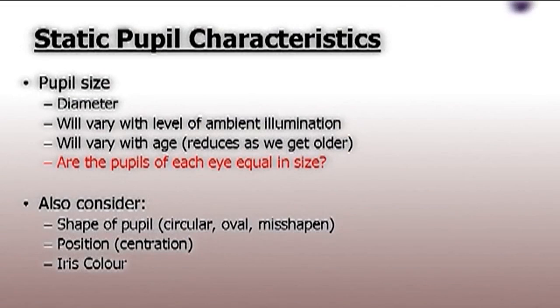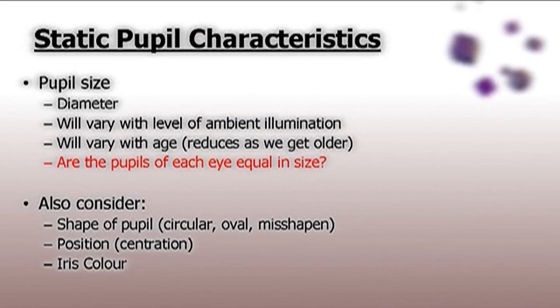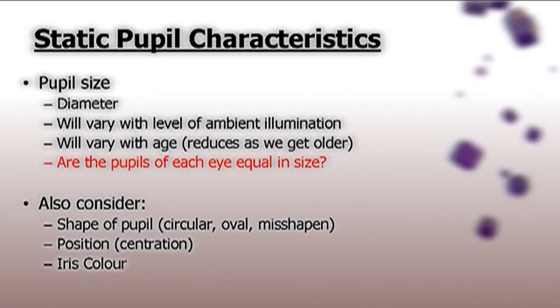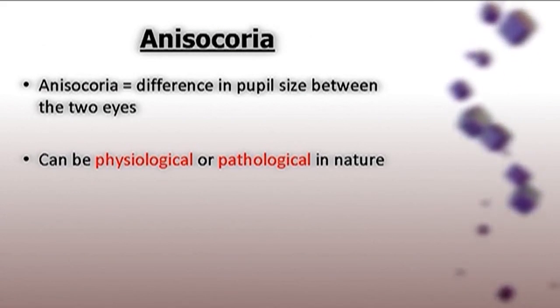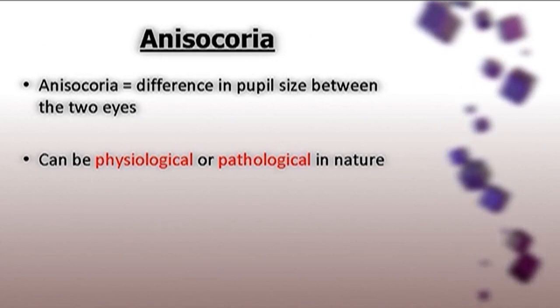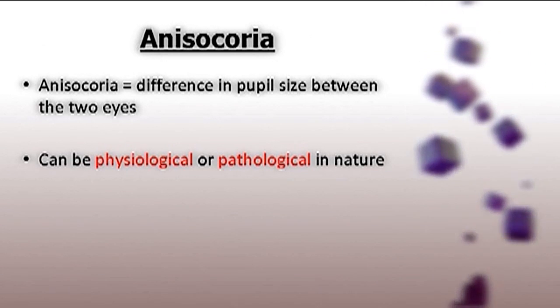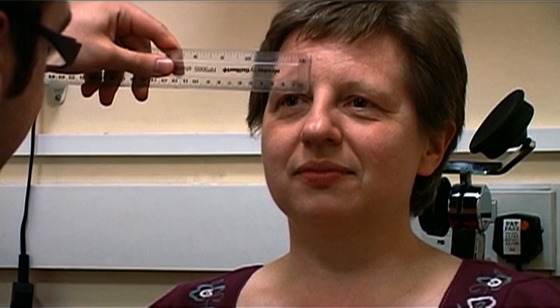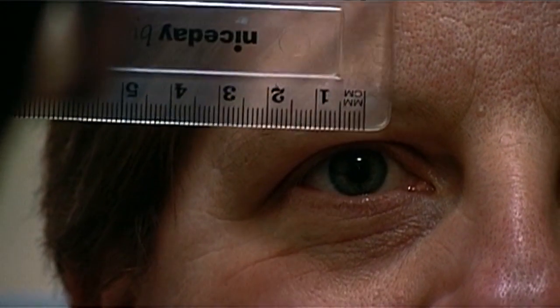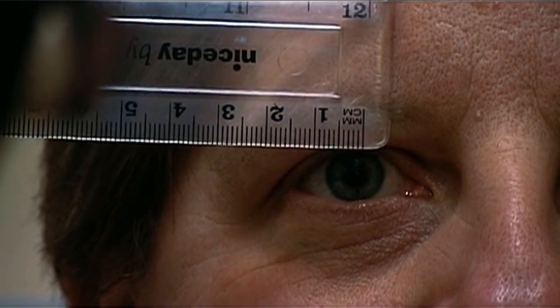Initially, we can look at the static characteristics of pupils by measuring the size in bright illumination. We're looking for any size difference between the two eyes, which would indicate anisochoria, although it is present in around one-fifth of the normal population. This can be measured using a simple millimetre rule, and if any difference in pupil size exists, we would then check that in dim illumination.